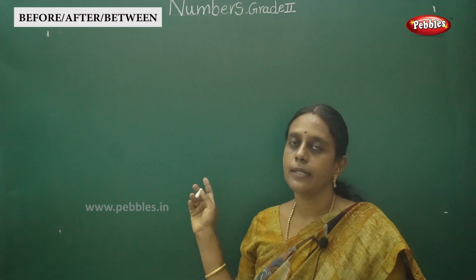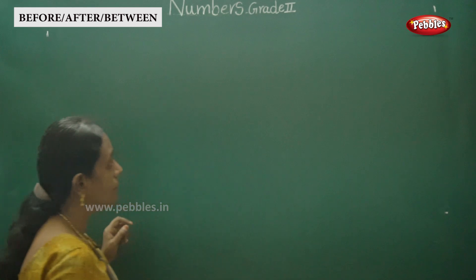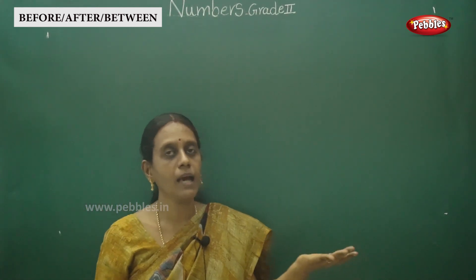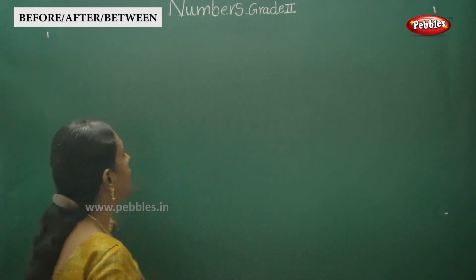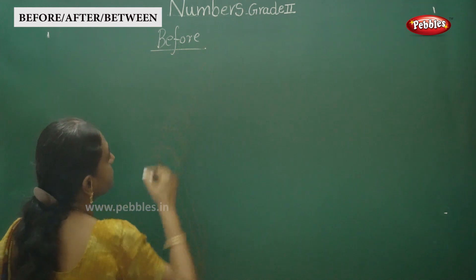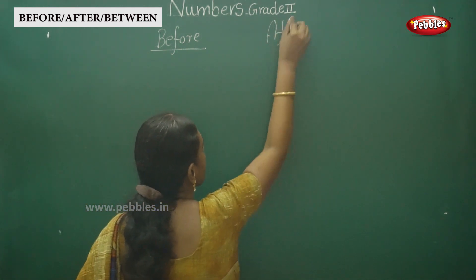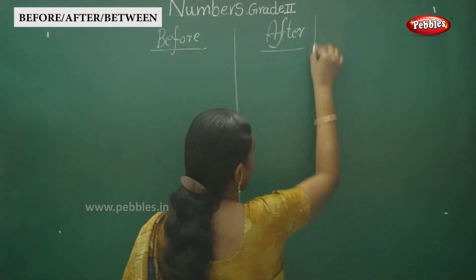Okay children, now we are going to learn what comes before, after, and between numbers. In a previous session we learned numbers between 1 to 100. In the same way, we are going to write what comes before, after, and between numbers up to 1000. First: before, then after, and next is between.